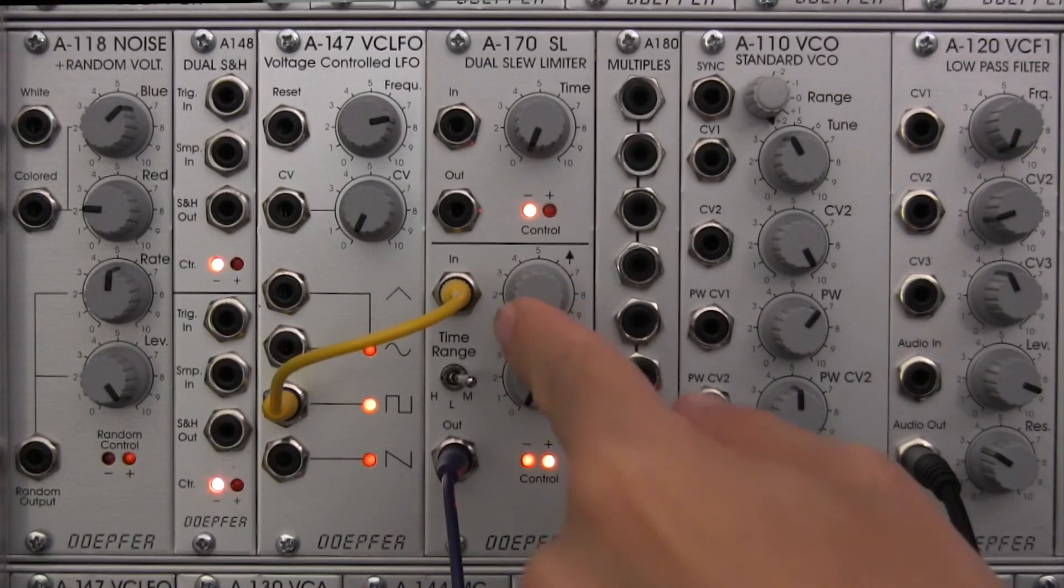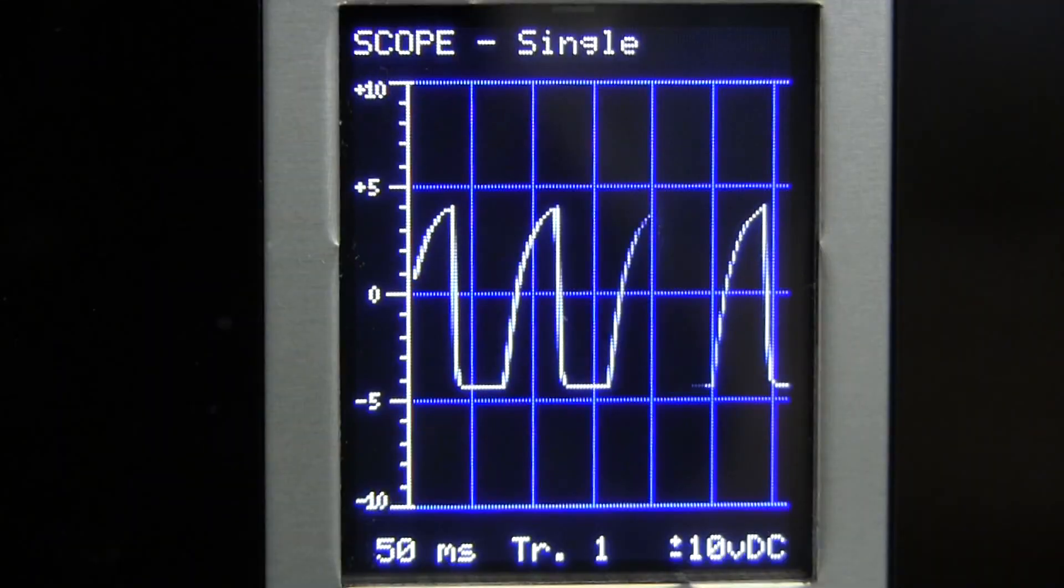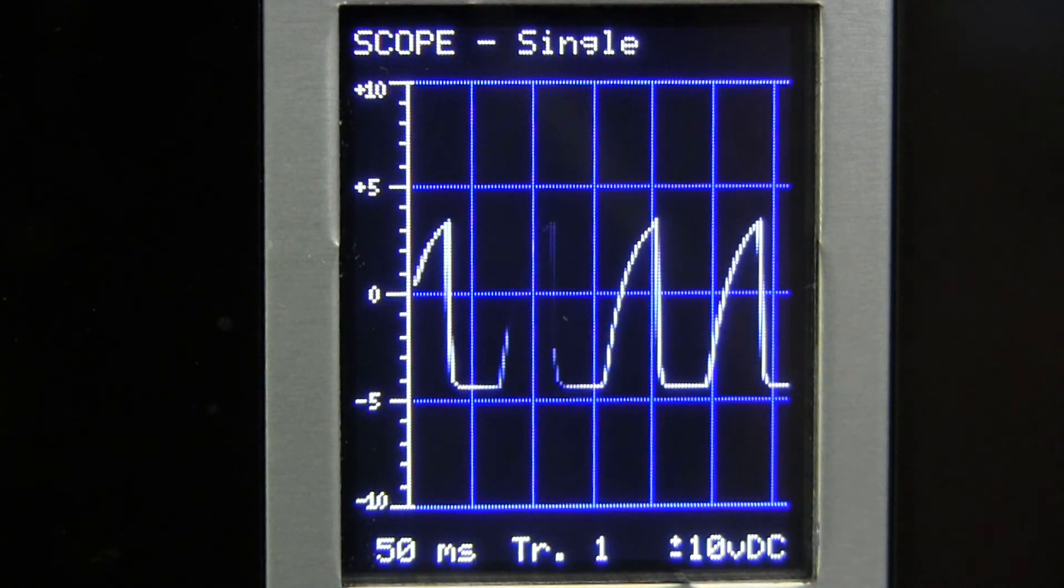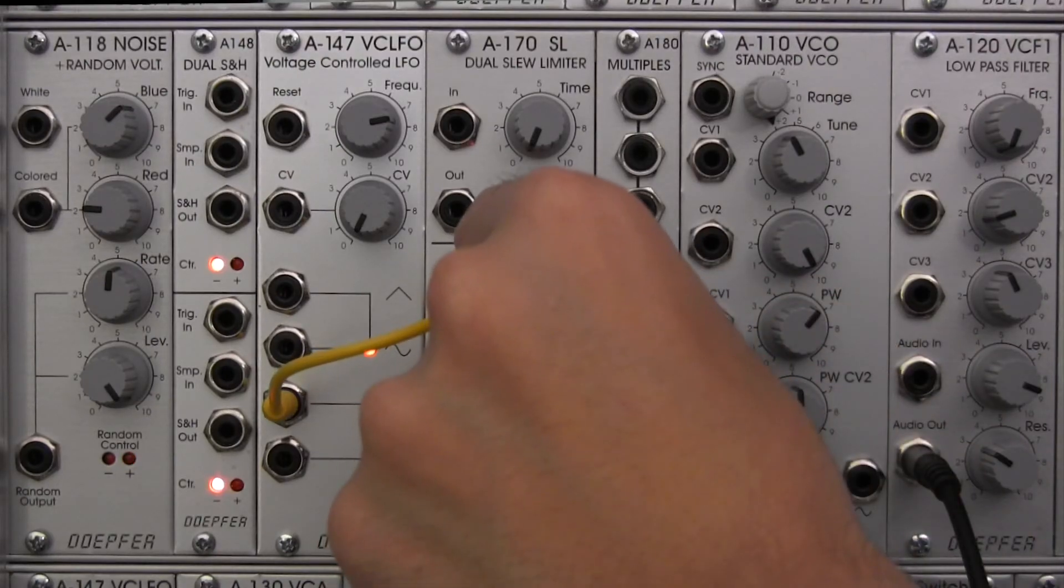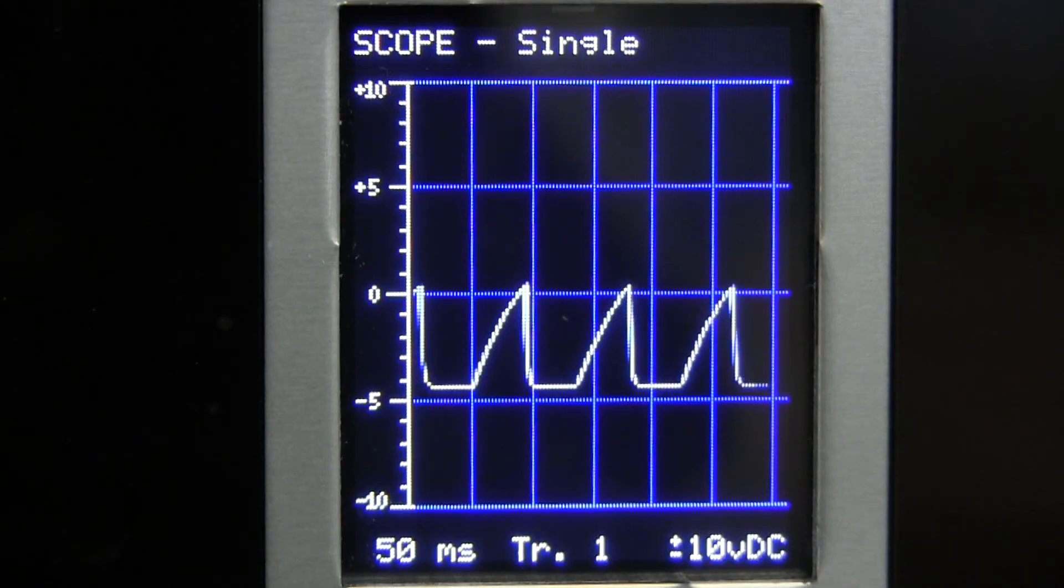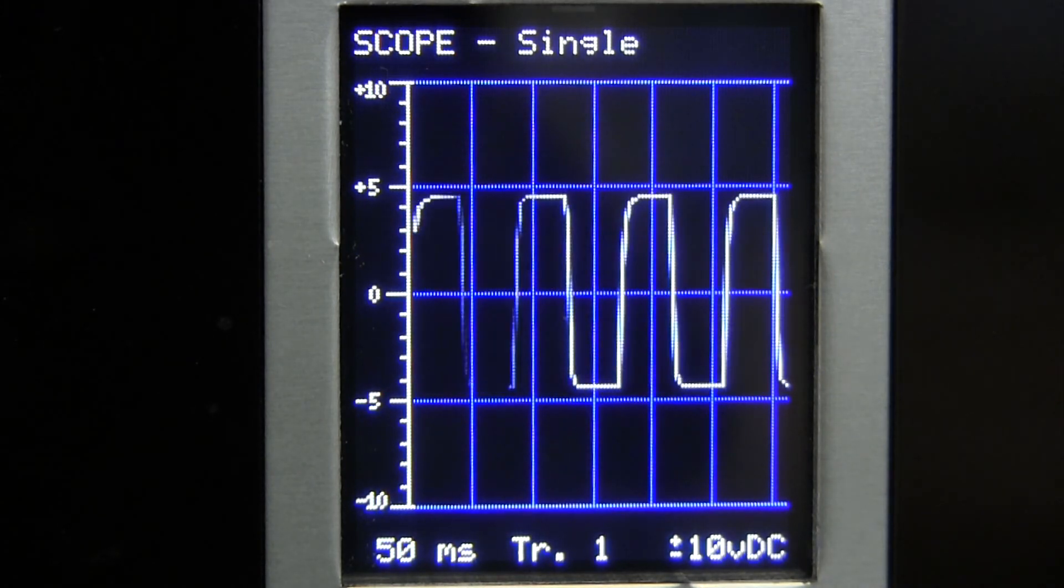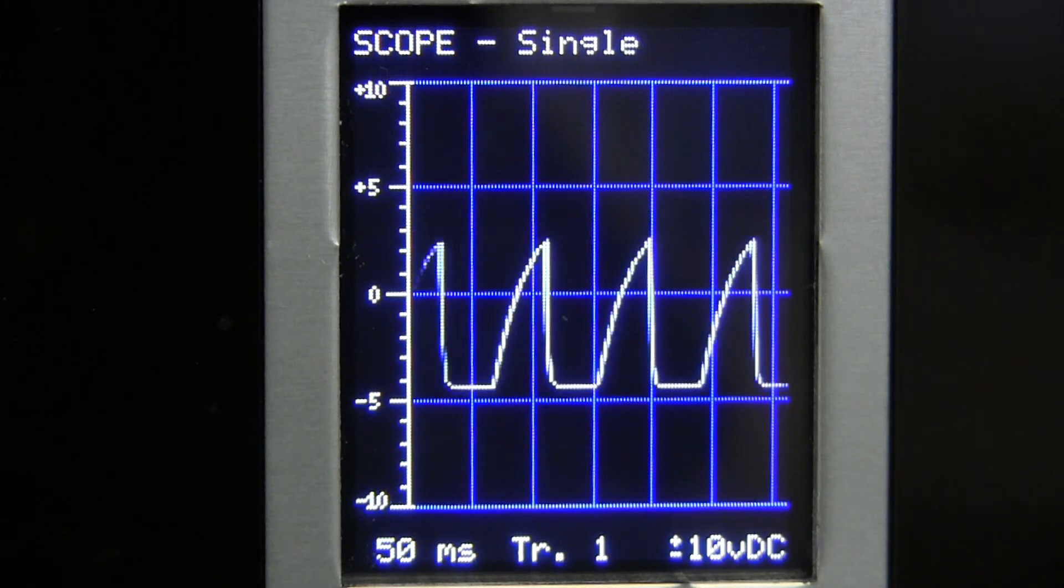Now let's adjust just the rise time over here. Oh, that's interesting. We've got a nice little slope up. And if I bring it up a little further, let's see how far it'll go. Yep, all the way down to the bottom. So that's a nice little shape right there.